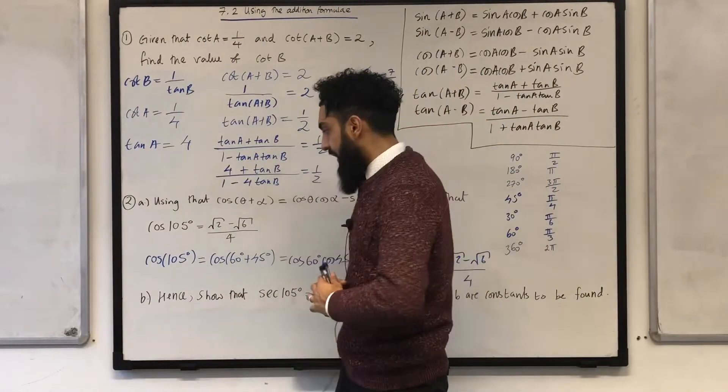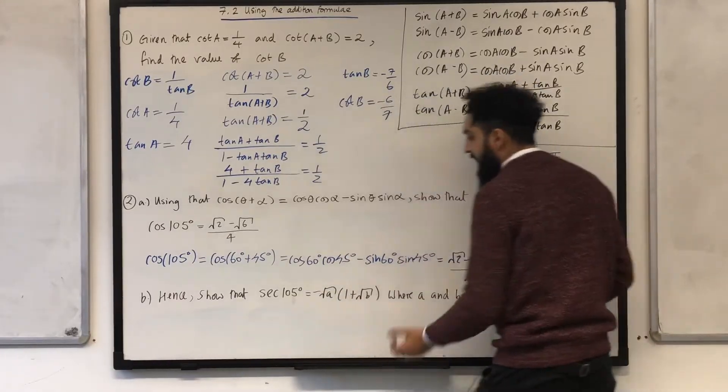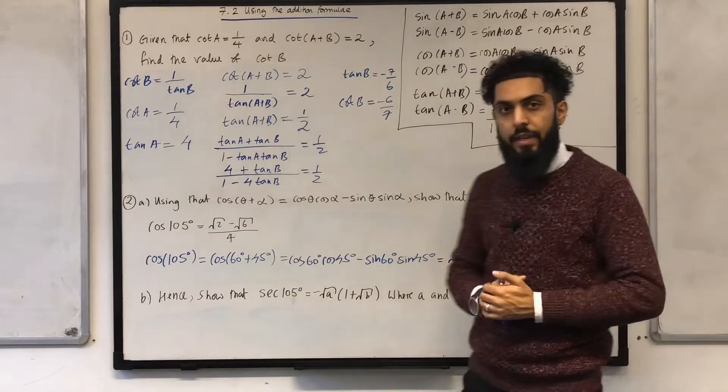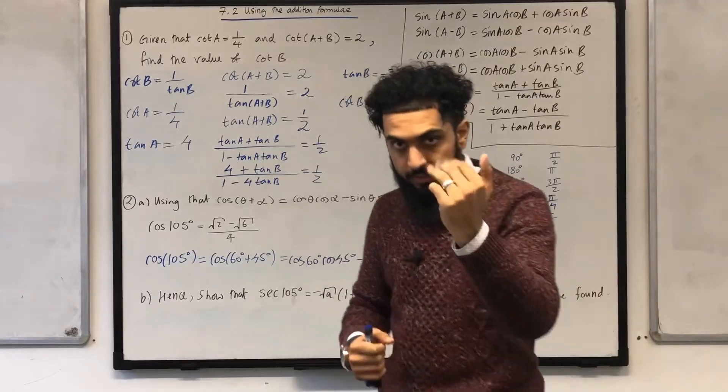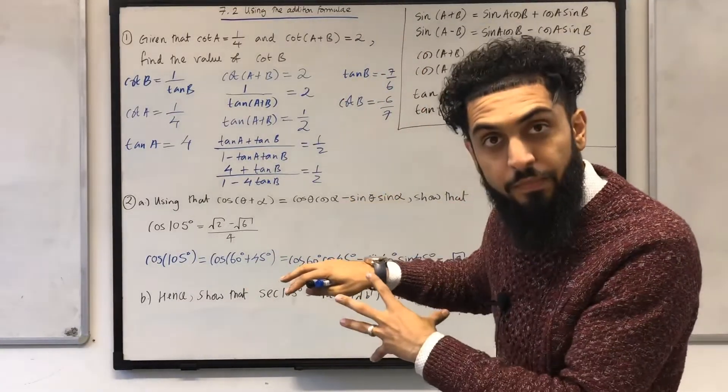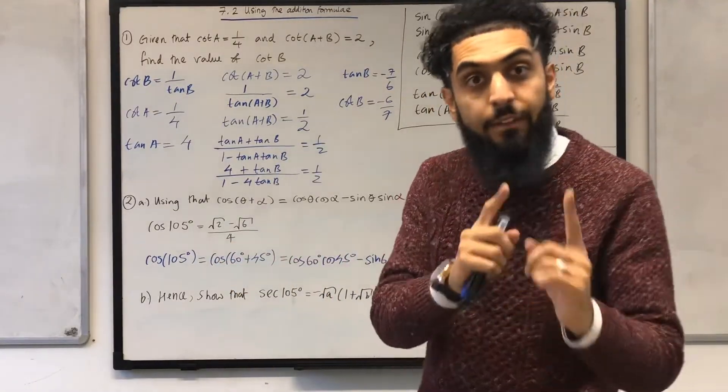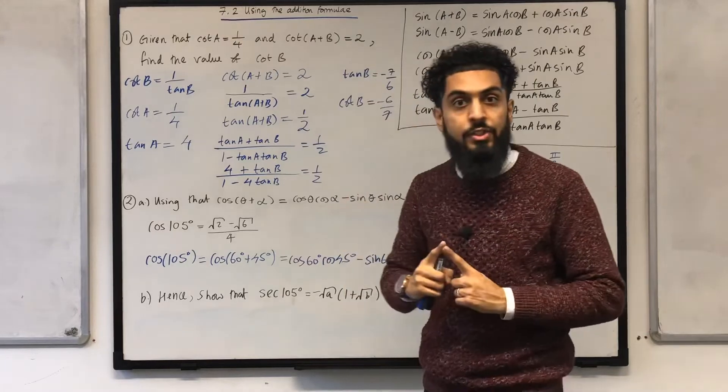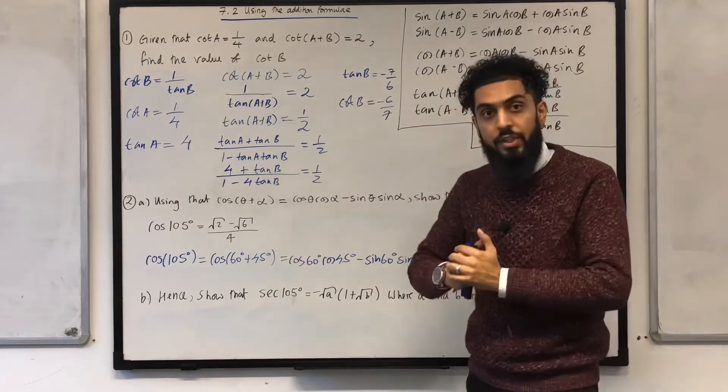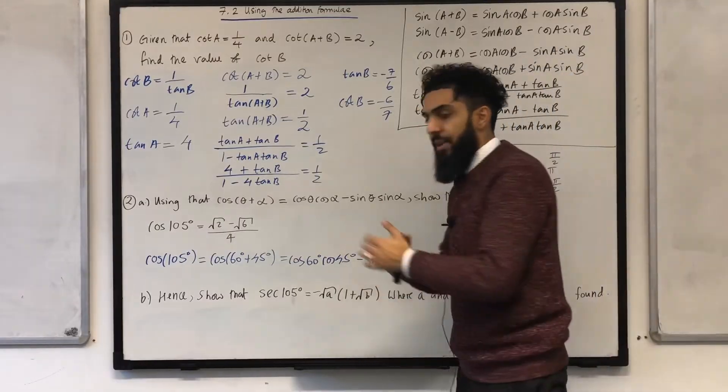Let's have a look at part b. It says, hence, show that sec 105 degrees is equal to this, stating the value of a and the value of b. Now, come here guys, come here. Can you see guys, it says, hence, when the examiner uses the word hence in the exam, you have to go back to the previous part of the question to answer the current part of the question. So, we are going to be doing that somewhere in the working out.